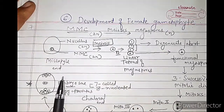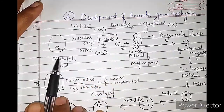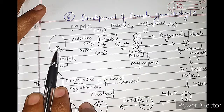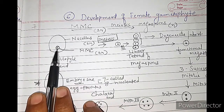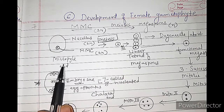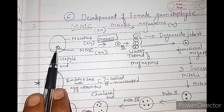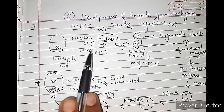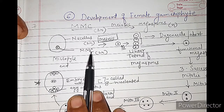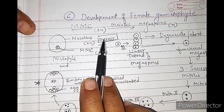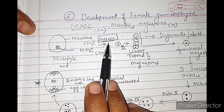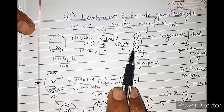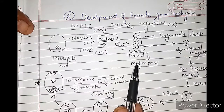The process starts inside the nucellus. Any one cell of the nucellus present towards the micropylar end acts as the megaspore mother cell. The megaspore mother cell undergoes meiosis — a reductional cell division — and produces a linear tetrad of 4 megaspores.